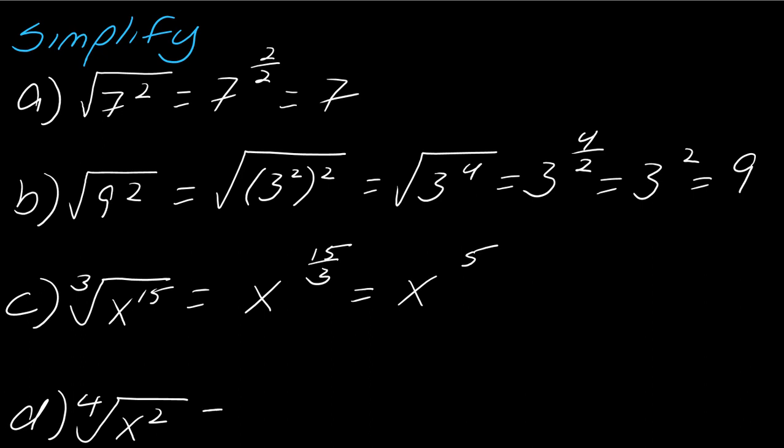And then for this last one, so the 2 goes on top, the 4 goes on bottom. So this will simplify then to x to the 1 half, and that can be rewritten as a square root.